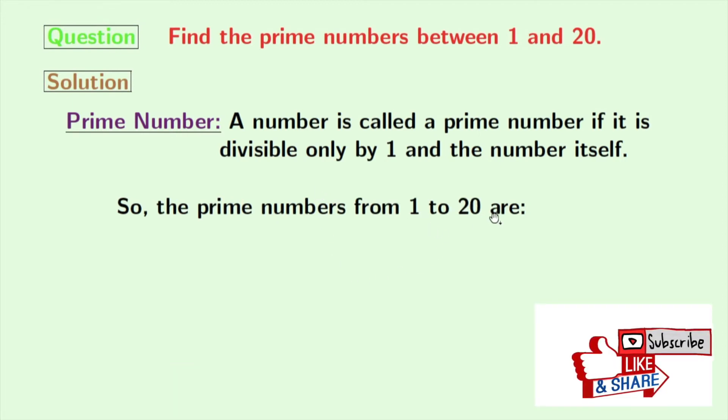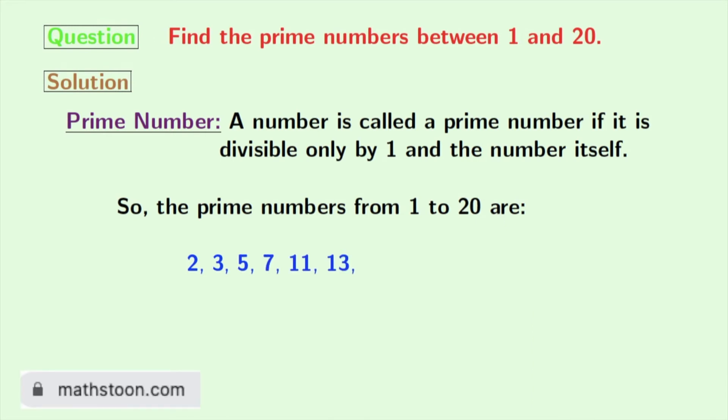2, 3, 5, 7, 11, 13, 17, and 19. So the total prime numbers between 1 and 20 is 8.